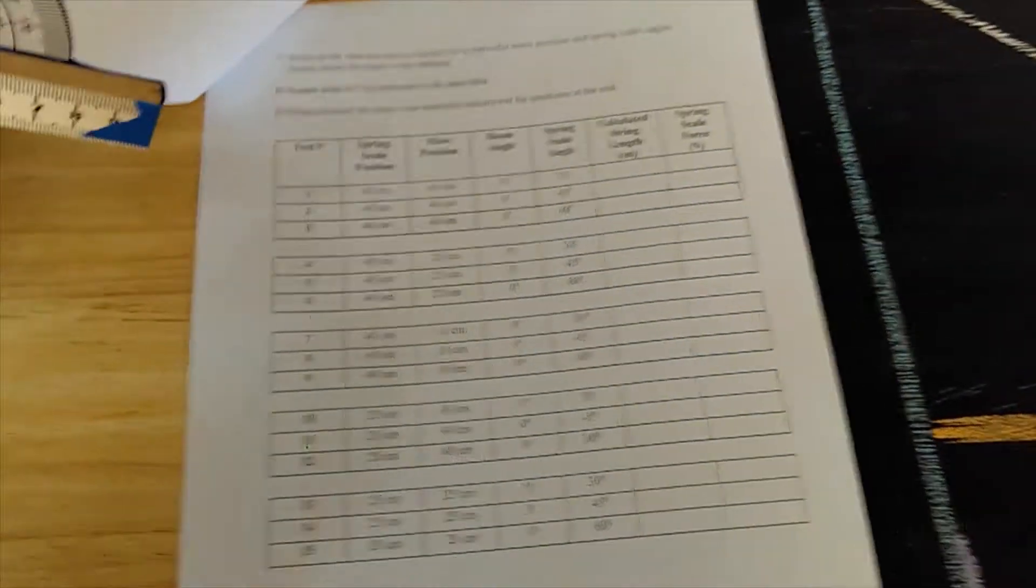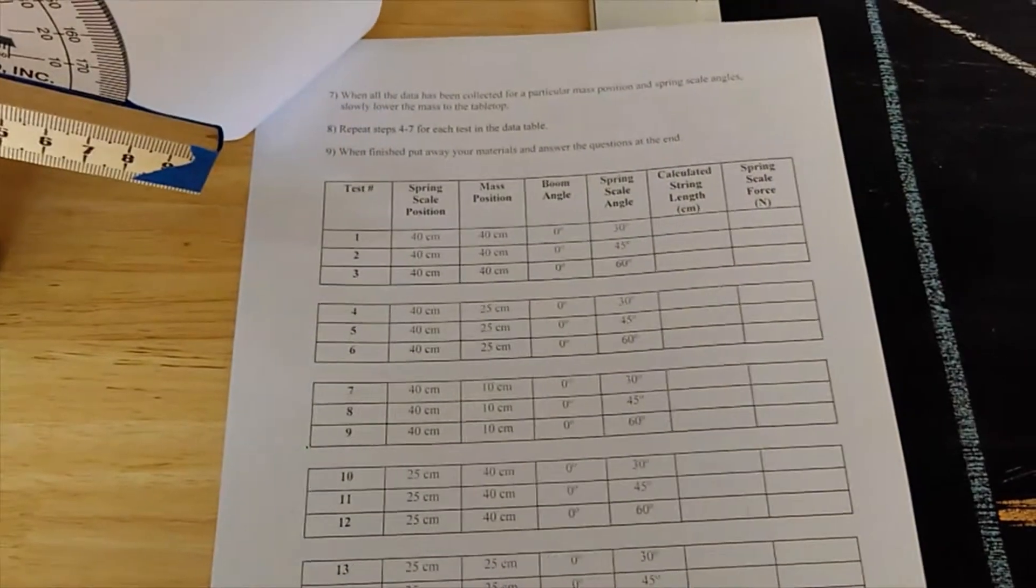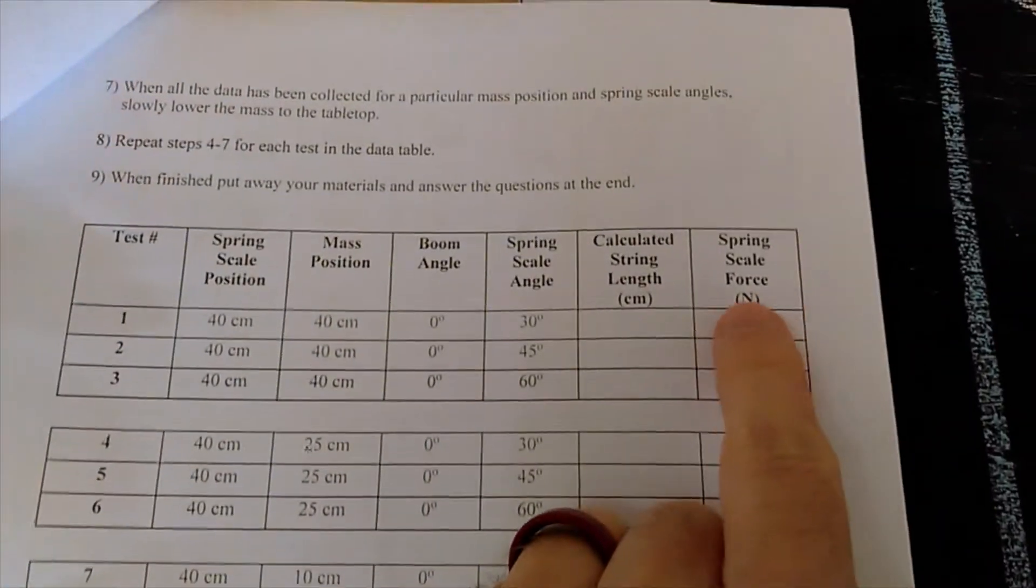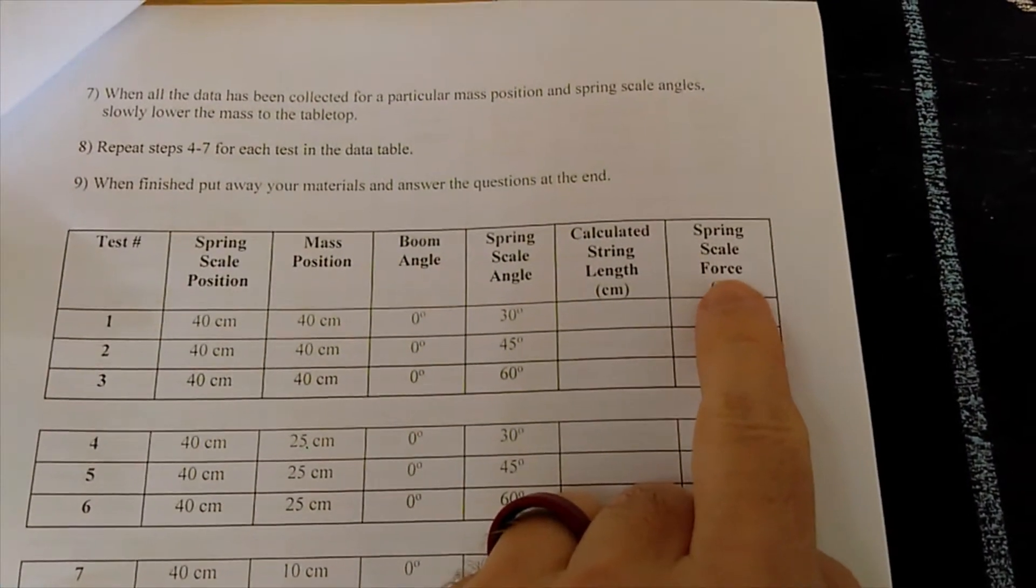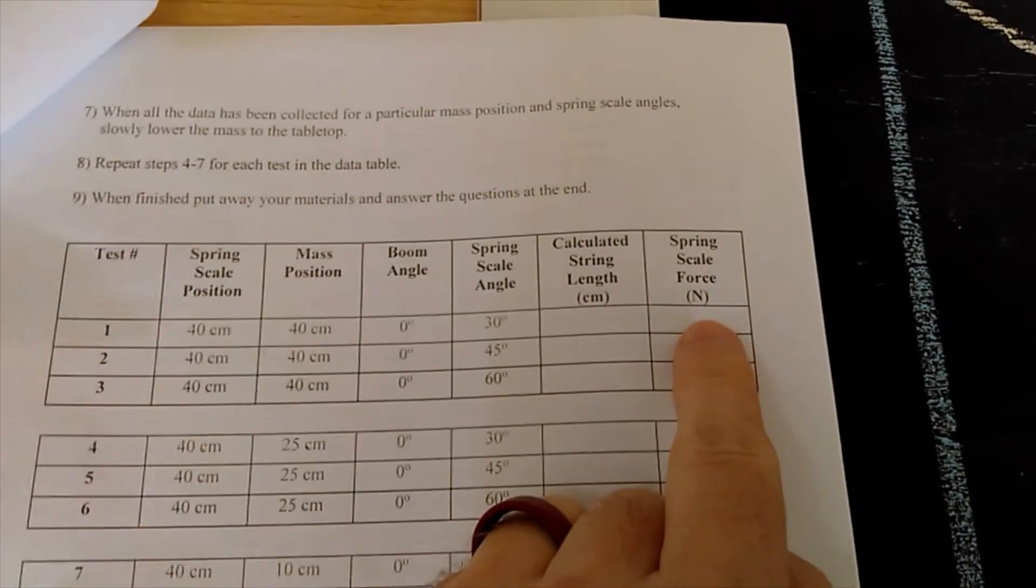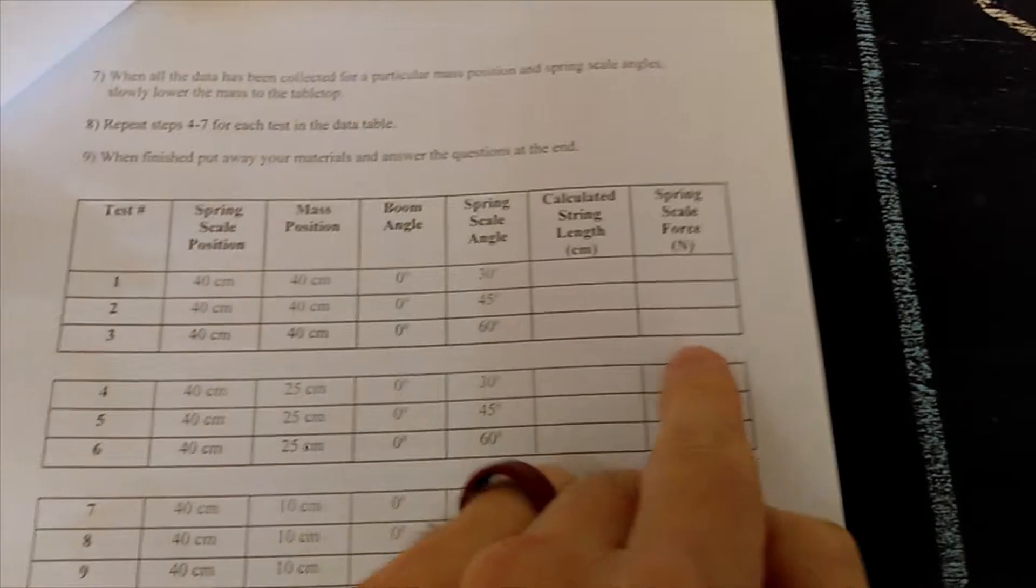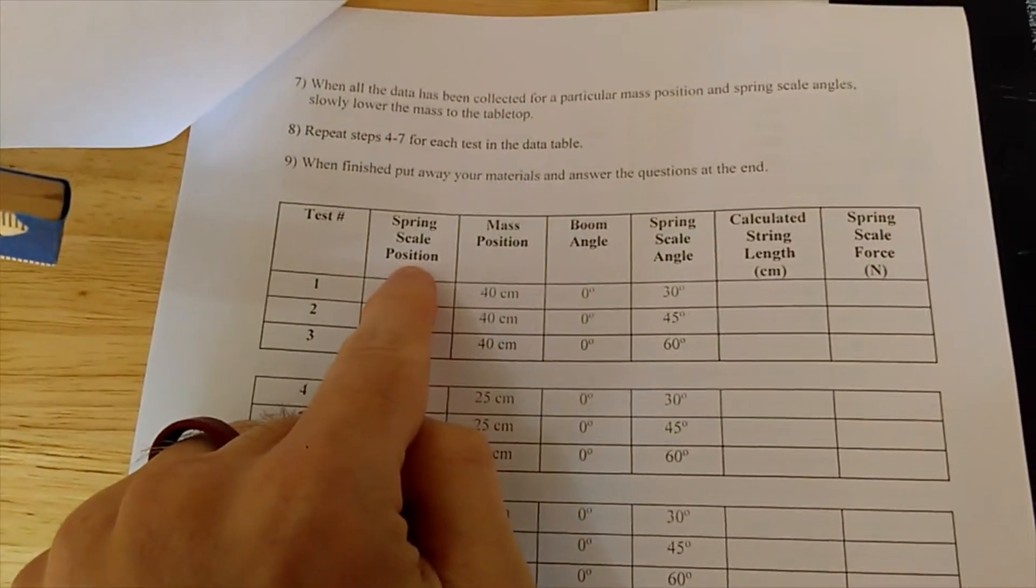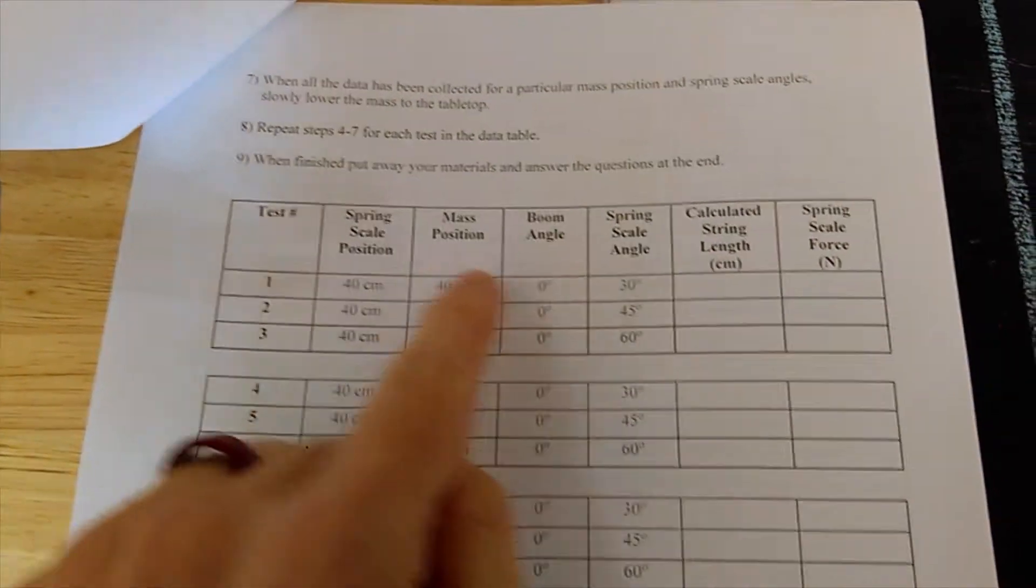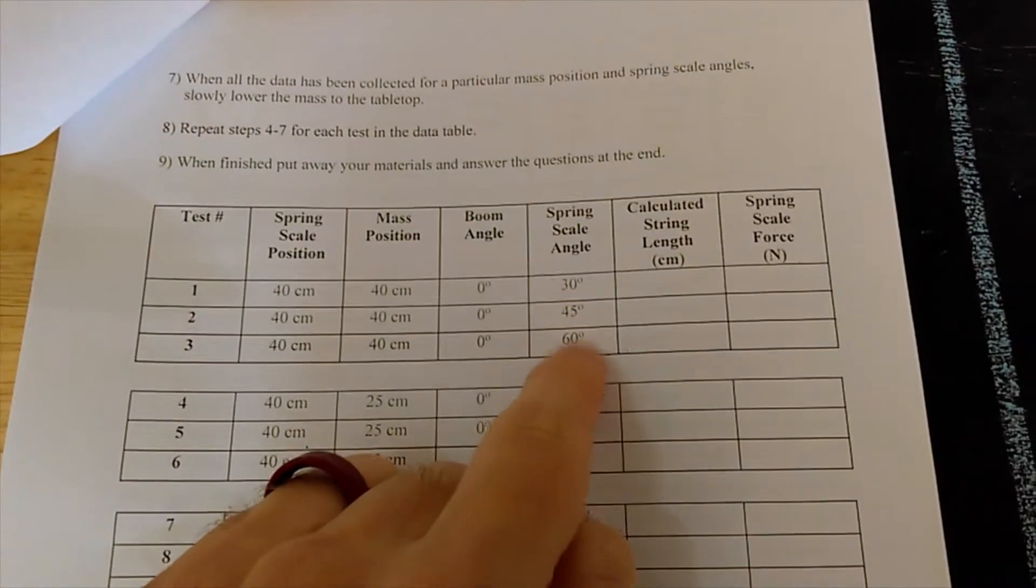So looking at this, there are a lot of data tables here. What I'm going to be measuring for you is this spring scale. These are the numbers you're going to hear me calling out. You're going to be recording on your data tables over here. You've got different spring scale positions, different mass positions, different angles we're using here.